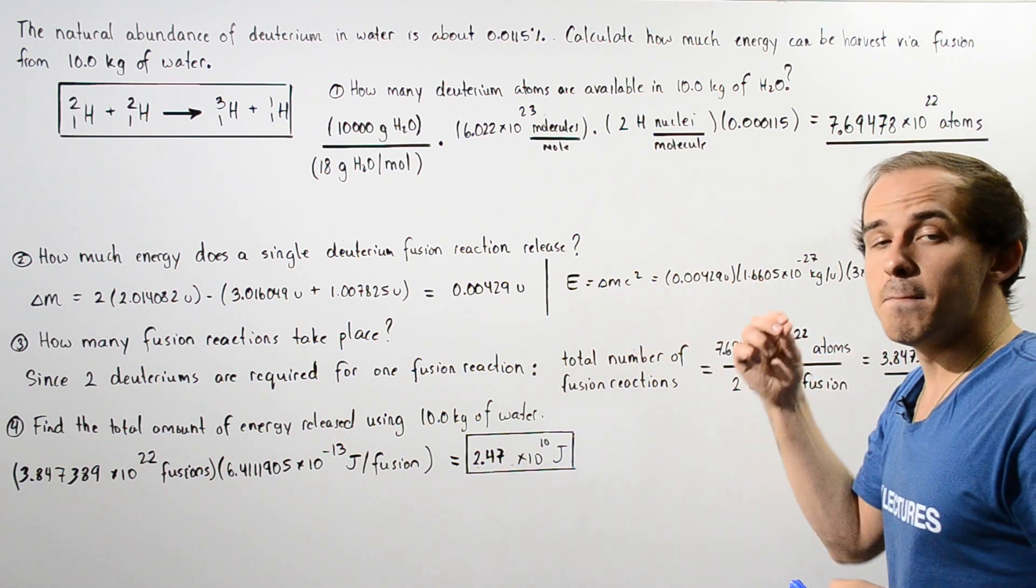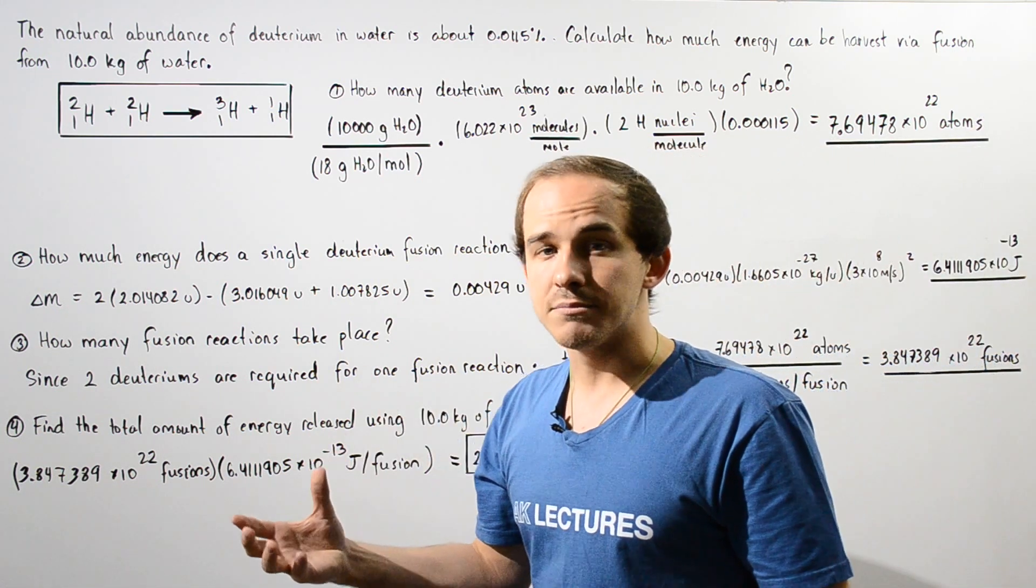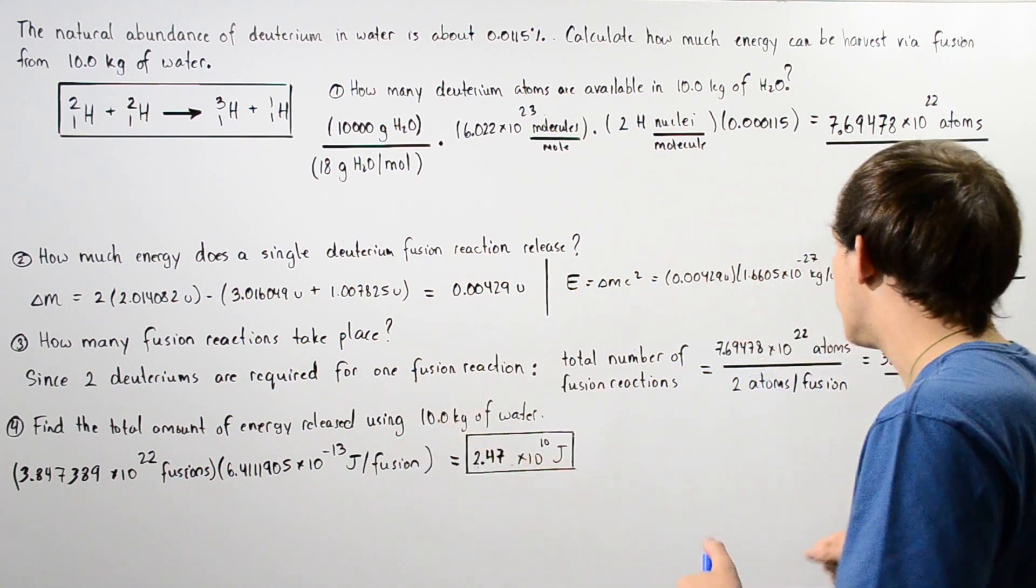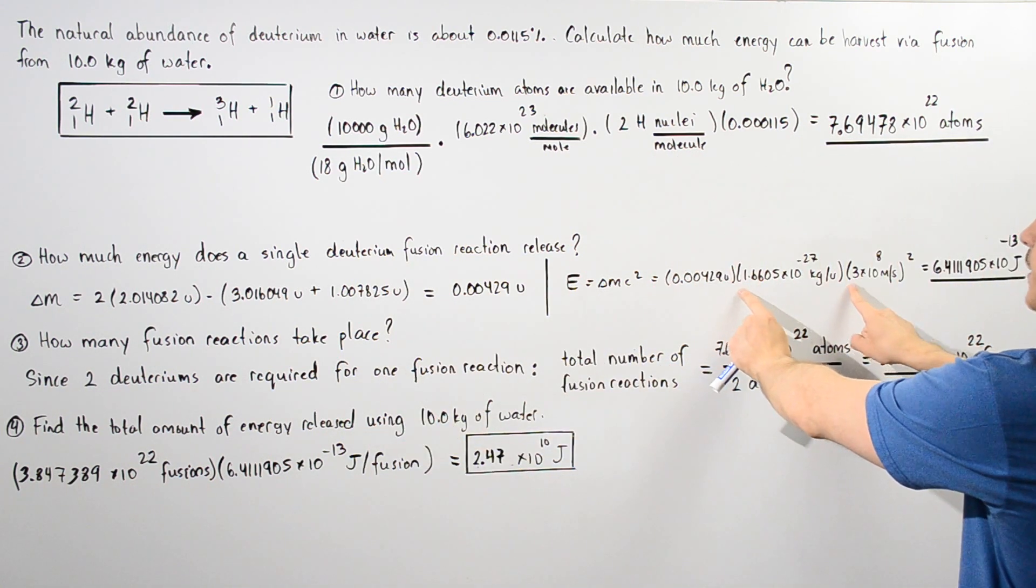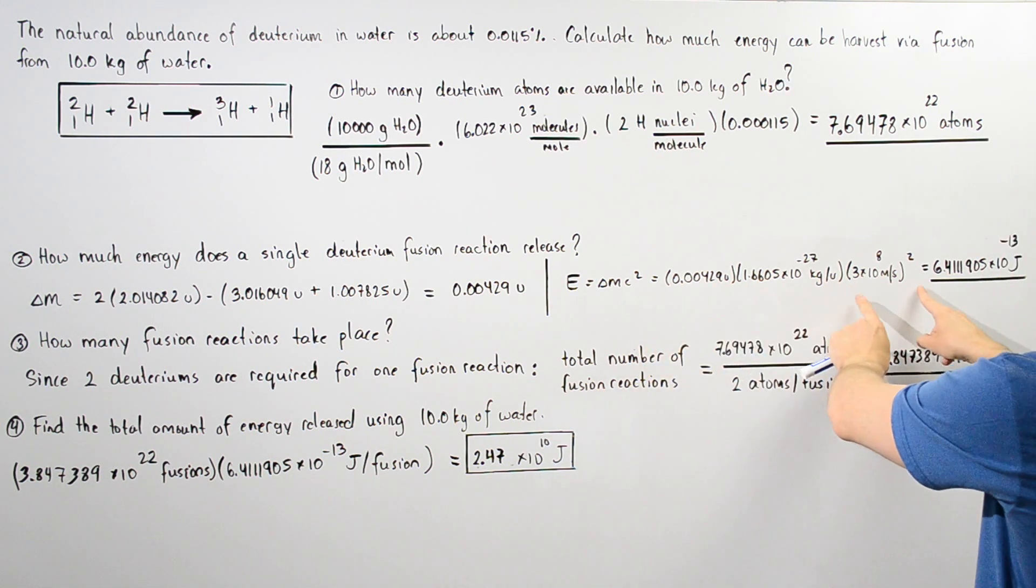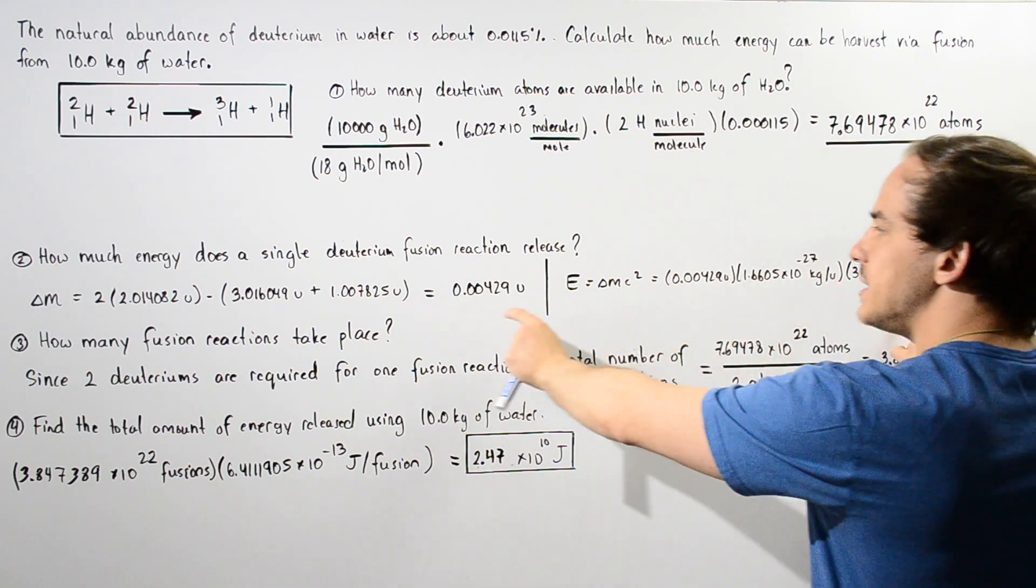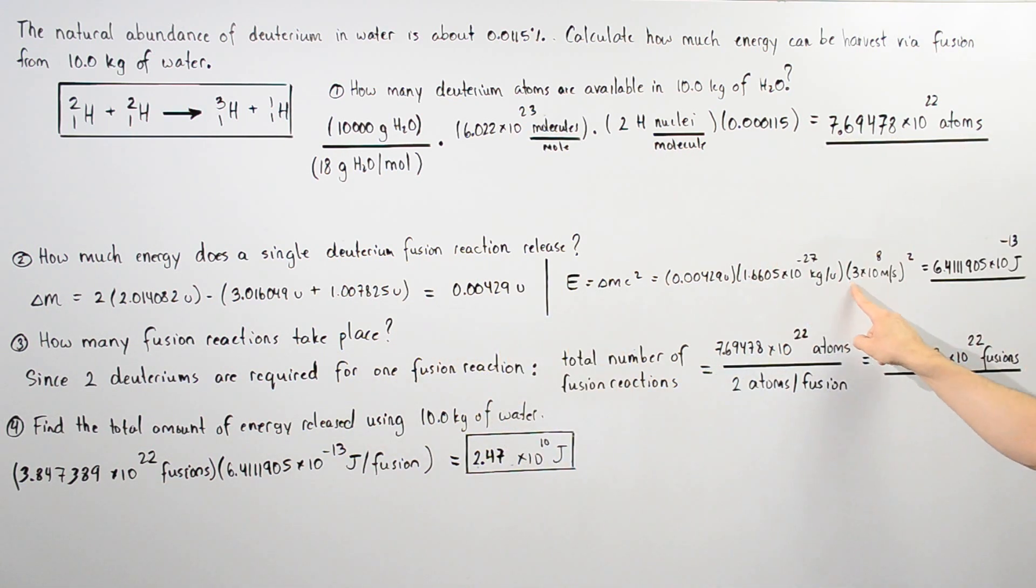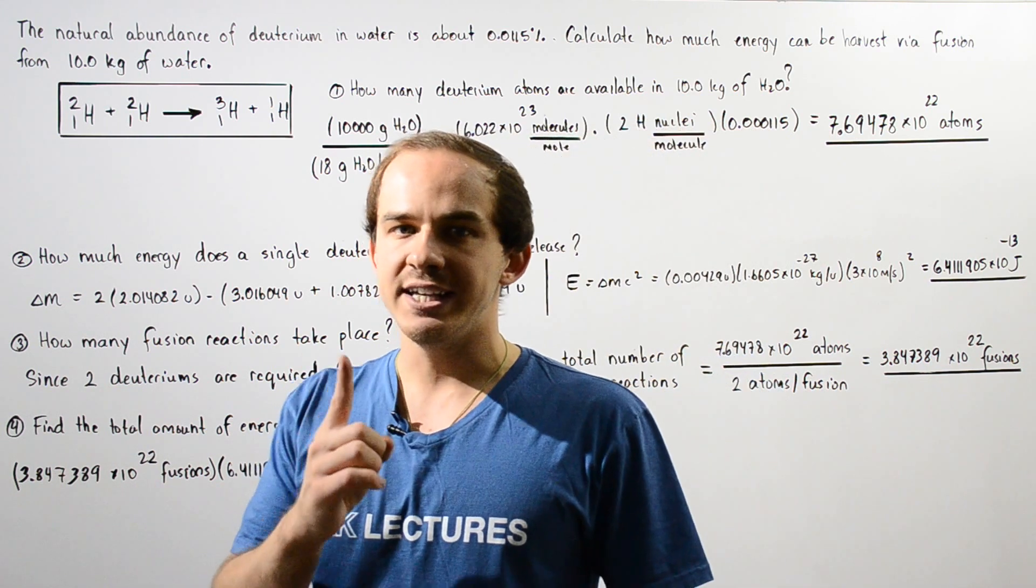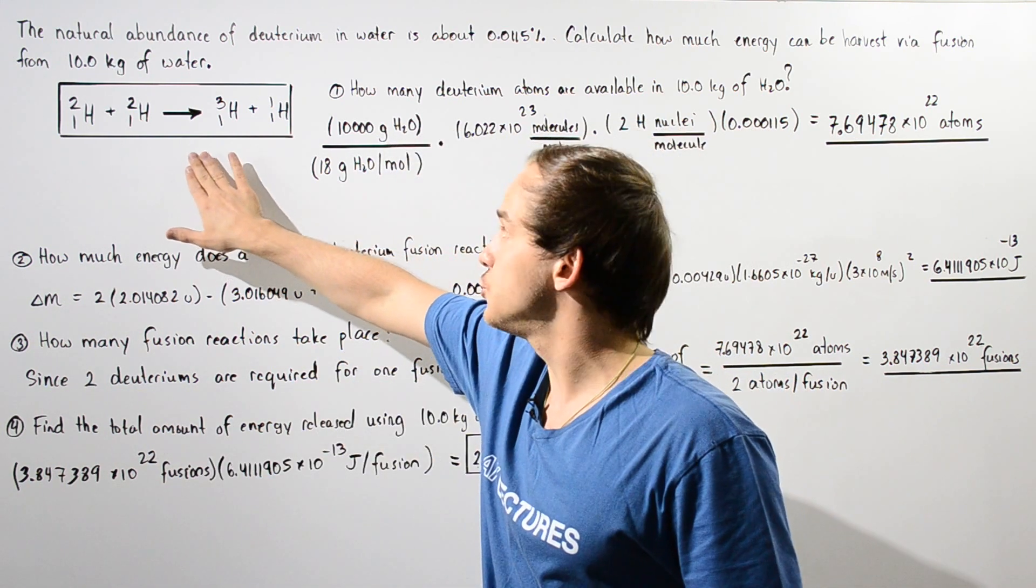Now the mass must be given in kilograms. So we basically take this and convert it into kilograms by multiplying it by the conversion factor. And then multiply that delta m by the square of the speed of light in a vacuum. And we get about 6.4111905 × 10^-13 joules. This is how much energy is released in a single reaction shown above.